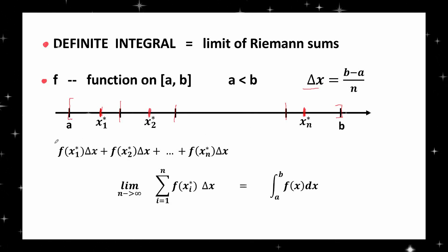Step 3: Consider the sum f(x₁*)Δx + f(x₂*)Δx + ... + f(xₙ*)Δx. This is the Riemann sum that corresponds to this partition and this particular choice of sample points.